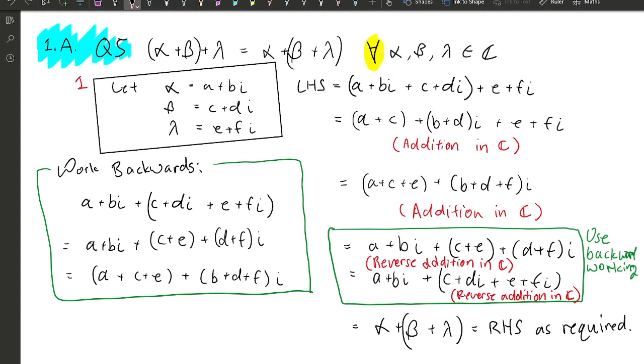First step, we let alpha be a plus bi, beta be c plus di, lambda be e plus fi. Then we can begin to manipulate the left hand side into being the right hand side.